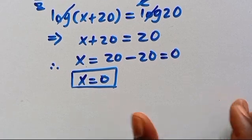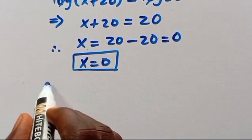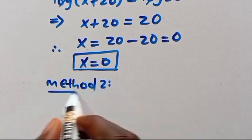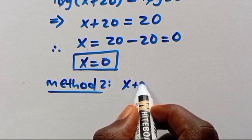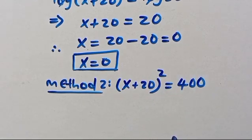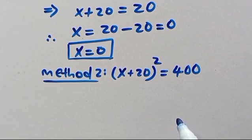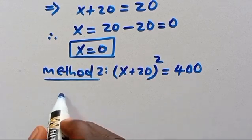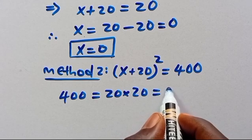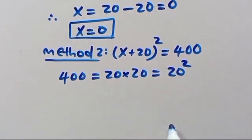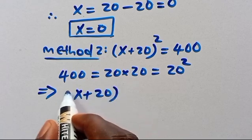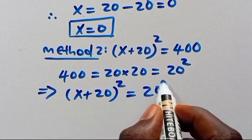Let's look at method 2. Recall we have (x+20)² = 400. We can use the idea of exponents. We know 400 = 20×20 = 20². So (x+20)² = 20².